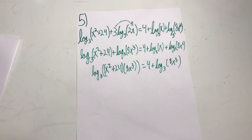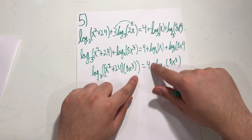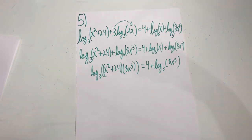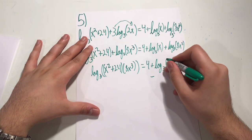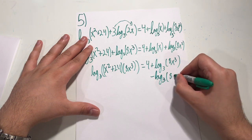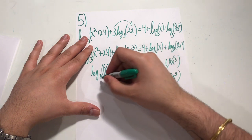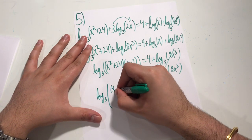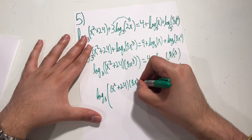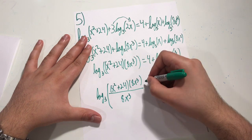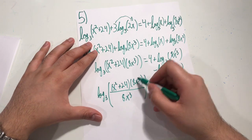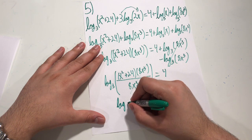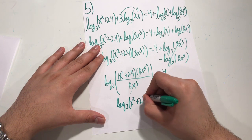On the left, I can also combine via the product rule, giving log₃((x² + 24) times 8x³). I notice both sides now have log₃(8x³), so rather than multiplying out, I'll subtract log₃(8x³) from both sides — it cancels on the right, and on the left becomes log₃ of the quantity (x² + 24) times 8x³ divided by 8x³. Those cancel, leaving log₃(x² + 24) equals 4.